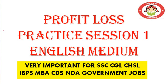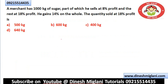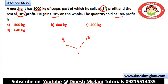While solving the questions we use English as well as a little bit of Hindi for making you understand. Our first question: a merchant has 1000 kg of sugar, part of which he sells at 8% profit and the rest at 18% profit. If overall he gains 14%, the question is: what quantity was sold at 18% profit? Although it is a question of profit and loss, we may use alligation and mixture here — that will make the question very easy. My first part is sold at 8% profit, second part at 18% profit, and overall profit percentage is 14%.